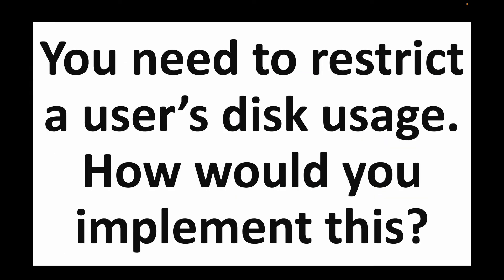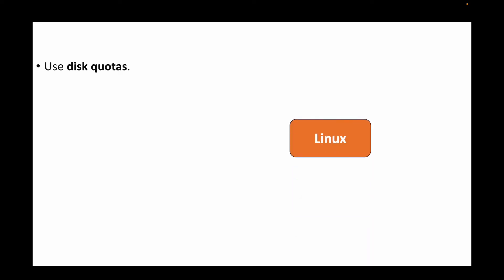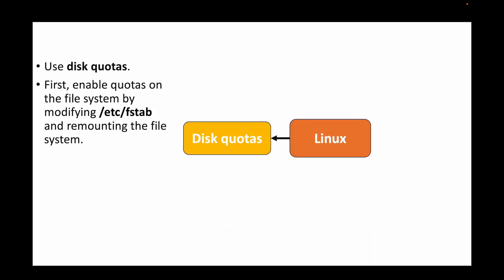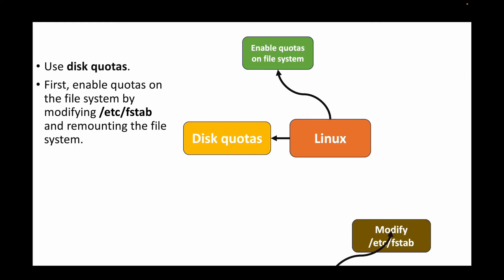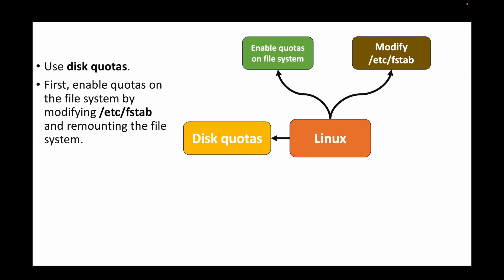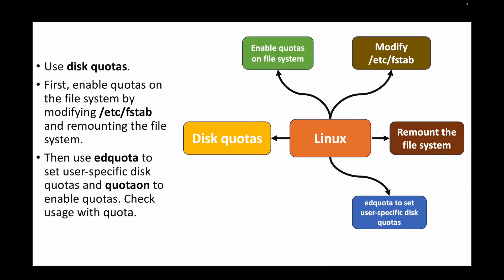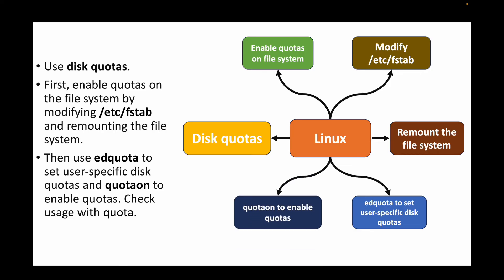The next question: you need to restrict a user's disk usage — how would you implement this? Use disk quotas. Enable quotas on the file system by modifying /etc/fstab and remounting the file system. Use edquota to set user-specific disk quotas, quota on to enable them, and then check usage with the quota command.